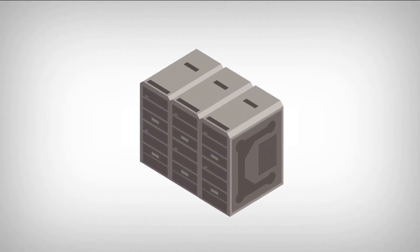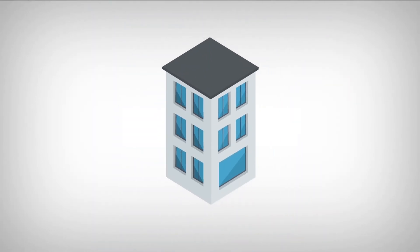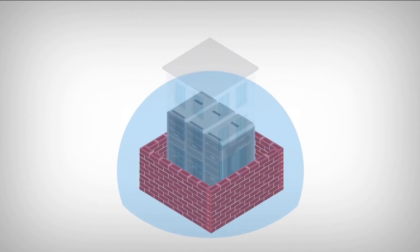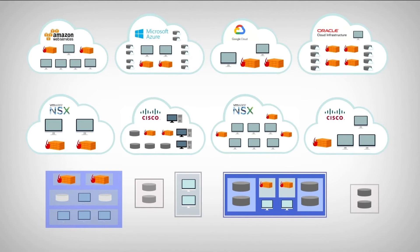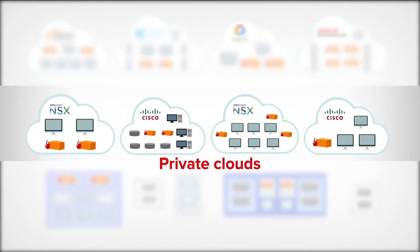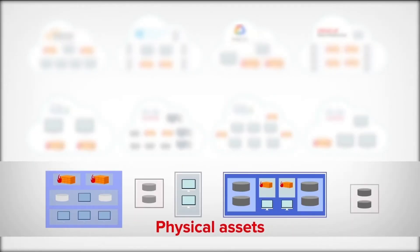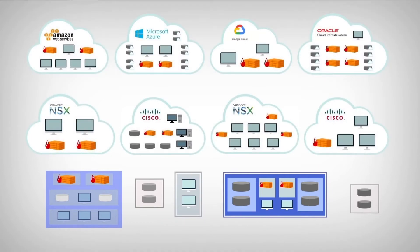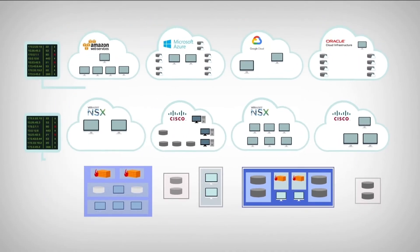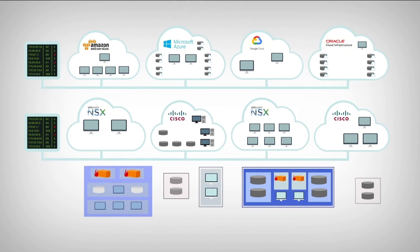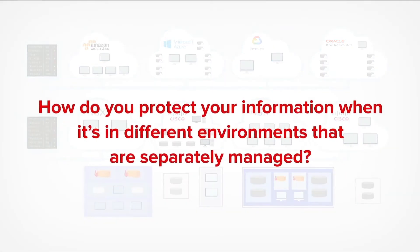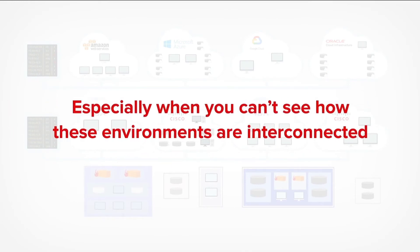Not long ago, data centers and all their assets were inside a building where you could control both physical and virtual access. But nowadays, data centers are hybrid data centers with assets in public and private clouds as well as physical assets. In private and public clouds, physical firewalls have been replaced by software. You can manage each one separately, but not collectively across environments. How do you protect your information when it's in different environments that are separately managed, especially when you can't see how these environments are interconnected?